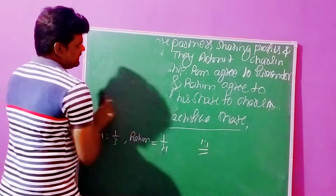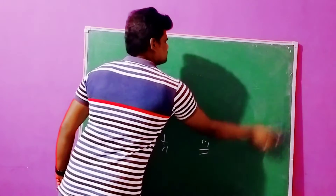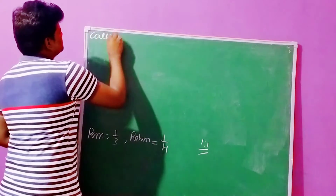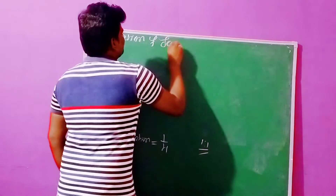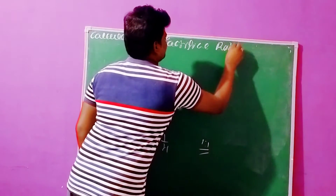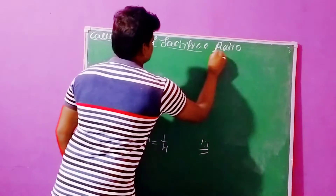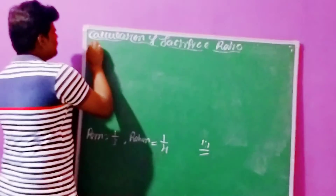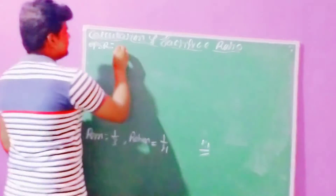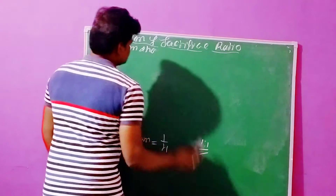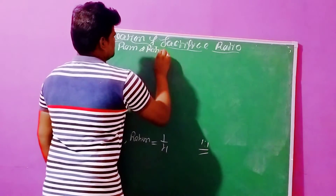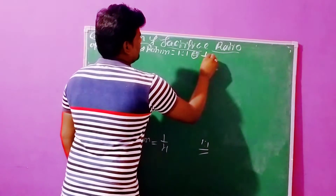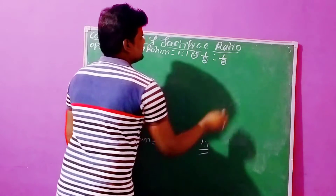First we need to write the headline: Calculation of Sacrifice Ratio. Before going further, we need to record the data given in the question. The profit sharing ratio given between Ram and Rahim — they are sharing profits and losses in the proportion of 1 is to 1, meaning 1 by 2 is to 1 by 2.